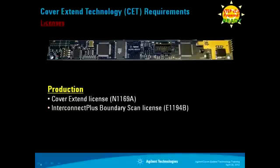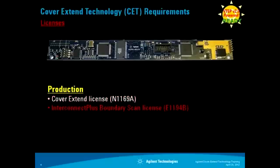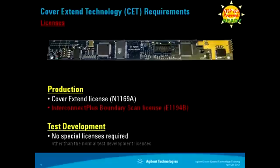Regarding licenses involved: for production, running a Cover S10 test will require a Cover S10 license. As we know, Cover S10 Technology is a hybrid of Agilent Boundary Scan and VTAP technologies. Hence, on top of the Cover S10 license, the InterConnect Plus Boundary Scan license is also needed.